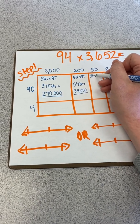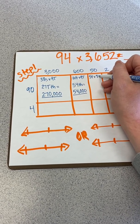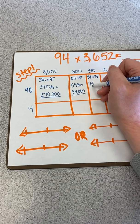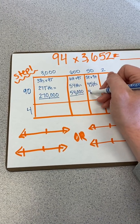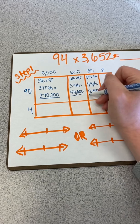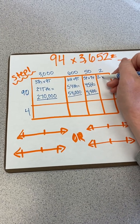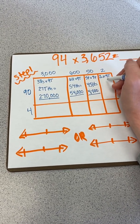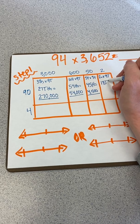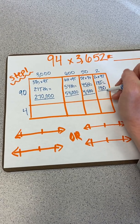Tens times tens give me hundreds. So when I multiply 5 tens times 9 tens, that gives me 45 hundreds, which has a value of 4,500. Two ones times 9 tens is 18 tens, which has a value of 180.